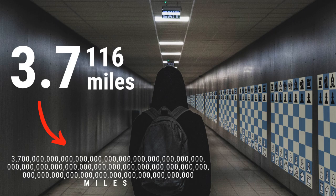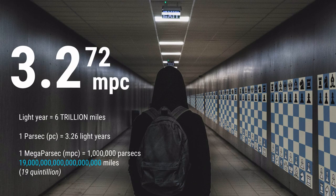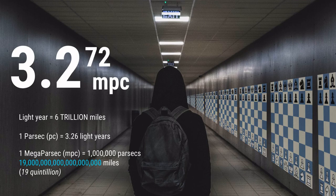That's kind of big. Let's convert it to something a little more reasonable. The hallway would span 3.2 to the 72nd power in megaparsecs. What's a megaparsec? Let's start with something small like light years. A light year is the distance covered at the speed of light in a vacuum for one Earth year — about 6 trillion miles. A parsec is 3.26 light years, or roughly 19 trillion miles. And a megaparsec is 1 million parsecs, or roughly 19 quintillion miles. So our hallway of possible chess games would span 3.2 to the 72nd power multiplied by 19 quintillion miles.